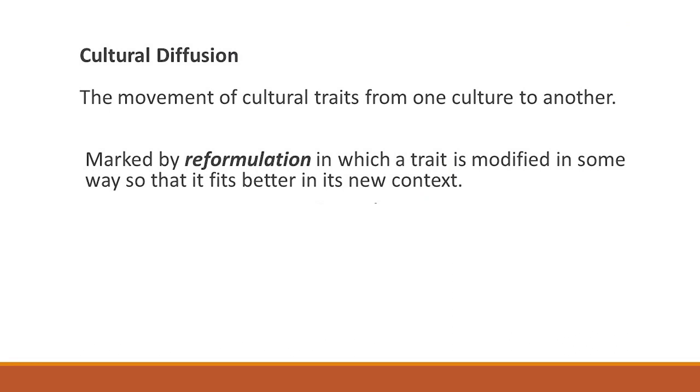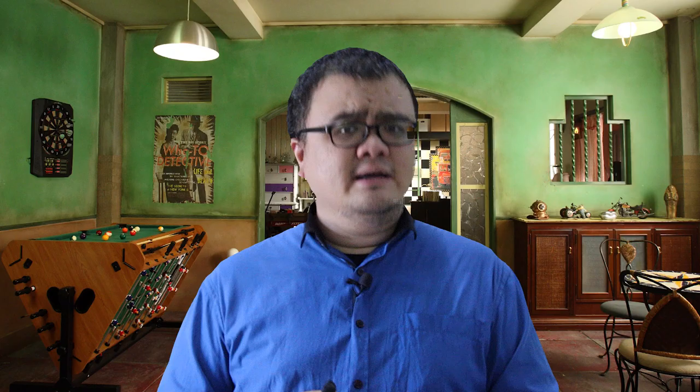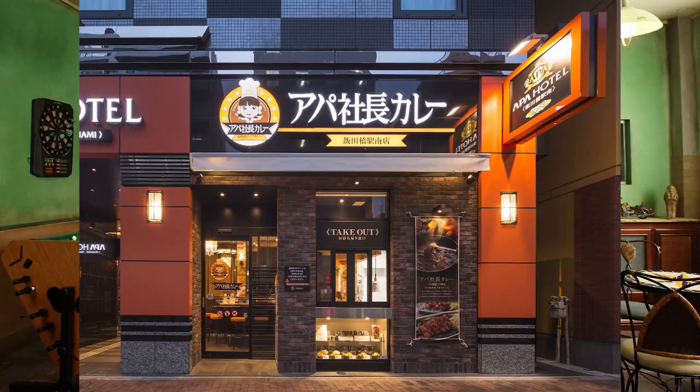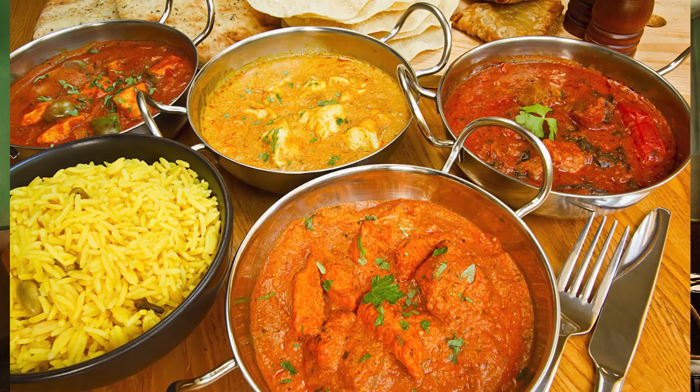However, when cultures are spread around the world, they tend to change. They are marked by reformulation, in which a trait is modified in some way so that it fits better in its new context. For example, where is curry from? Curry originated from India. Curry is so prevalent and popular all around the world that every country seems to have their own style or twist. Japanese curry is very popular in Japan — if you walk down the streets of Tokyo, you will find many curry restaurants. However, Japanese curry is quite different from your typical traditional Indian curry; it seems to be more of a thick stew.